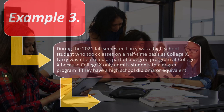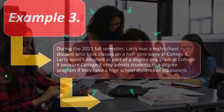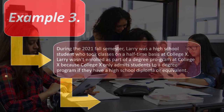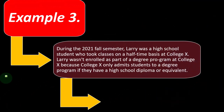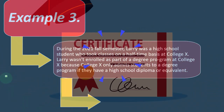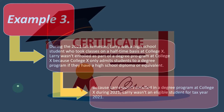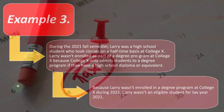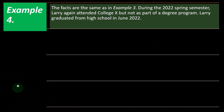Example three: During the 2021 fall semester, Larry was a high school student who took classes on a half-time basis at College X. Larry wasn't enrolled as part of a degree program at College X because College X only admits students to a degree program if they have a high school diploma or equivalent. Because Larry wasn't enrolled in a degree program at College X during 2021, Larry wasn't an eligible student for that tax year — he's taking the class but it's not going toward a degree.